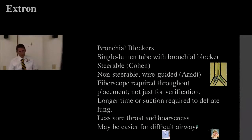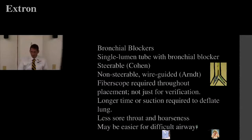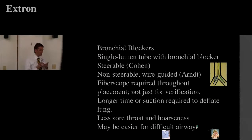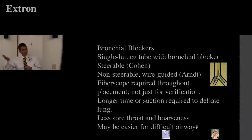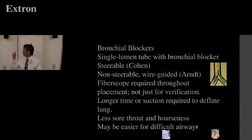For bronchial blockers, you can use a single lumen tube with a steerable blocker (the Cohen), or the non-steerable wire-guided blocker that slips over your fiber optic. With bronchial blockers you really need fiber optic confirmation — there's no other way of knowing exactly where the blocker sits. You want it just right beyond the carina. We use fiber optic more now even for double lumen tubes to verify placement.